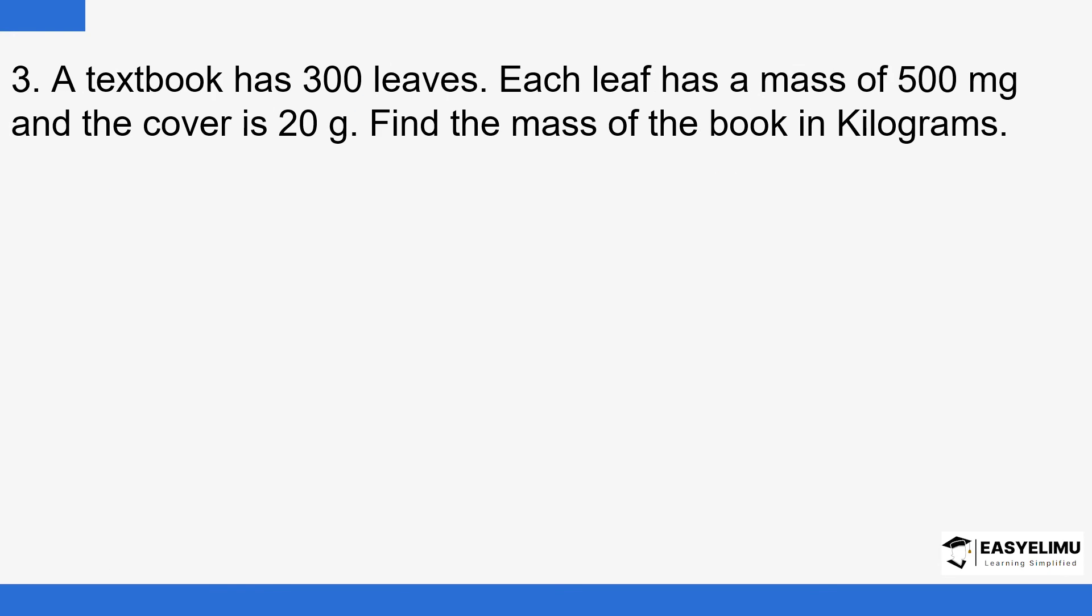There is a textbook that has 300 leaves. Each leaf has a mass of 500 milligrams, and the cover is 20 grams. Find the mass of the book in kilograms. Mass should be equal to 300 multiplied by the mass of each leaf, which is 500, and then you add to the mass of the cover, which is 20. This is 150,000.